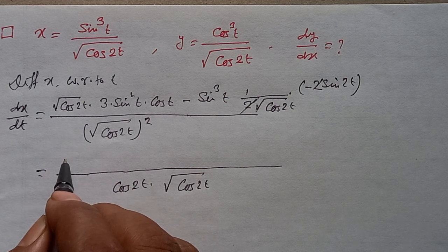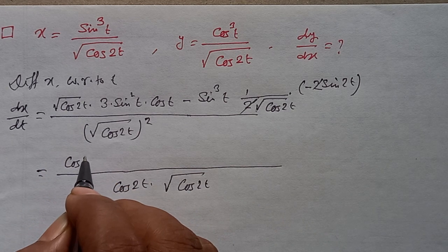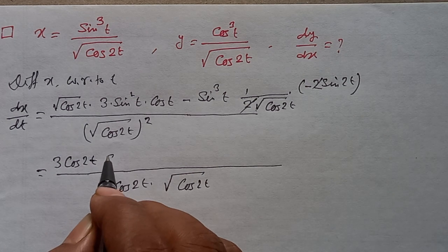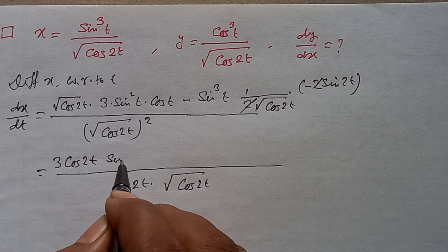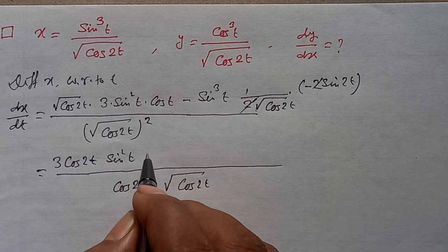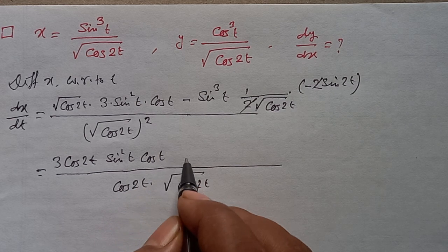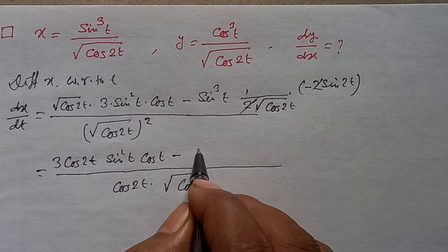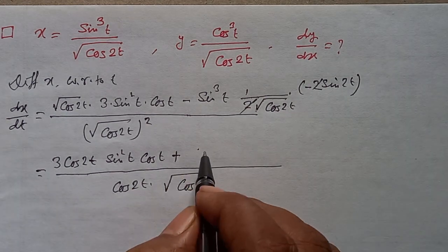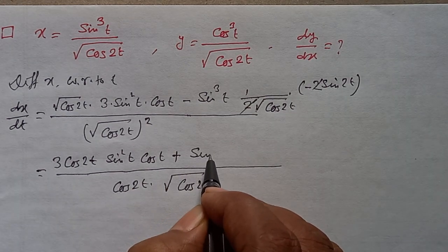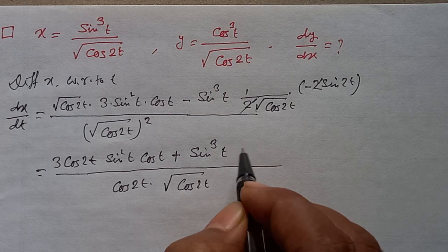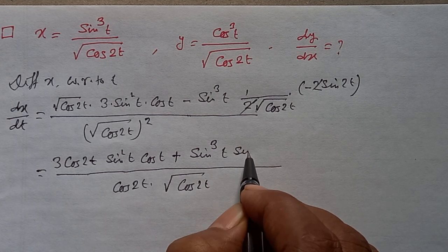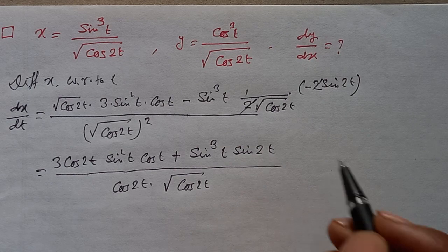This simplifies to: cos 2t times 3 sine square t into cos t, plus sine cube t into sine 2t.